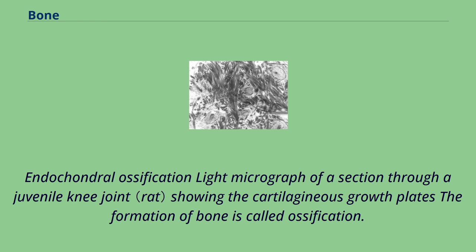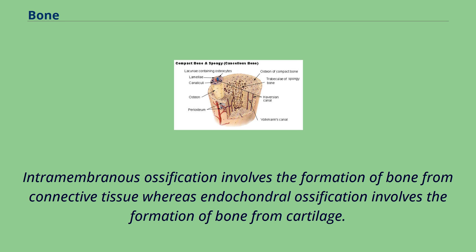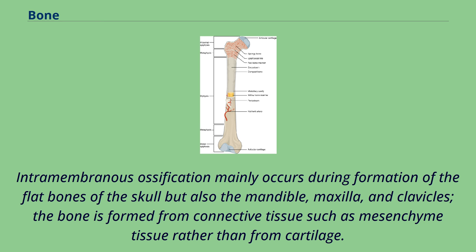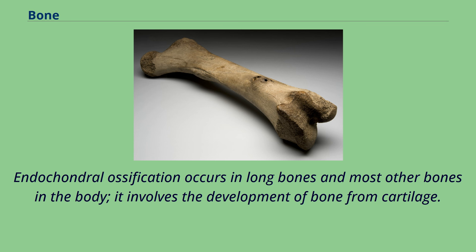The formation of bone is called ossification. During the fetal stage of development, this occurs by two processes: intramembranous ossification and endochondral ossification. Intramembranous ossification involves the formation of bone from connective tissue, whereas endochondral ossification involves the formation of bone from cartilage. Intramembranous ossification mainly occurs during formation of the flat bones of the skull but also the mandible, maxilla, and clavicles. The process includes the development of the ossification center, calcification, trabeculi formation, and the development of the periosteum.